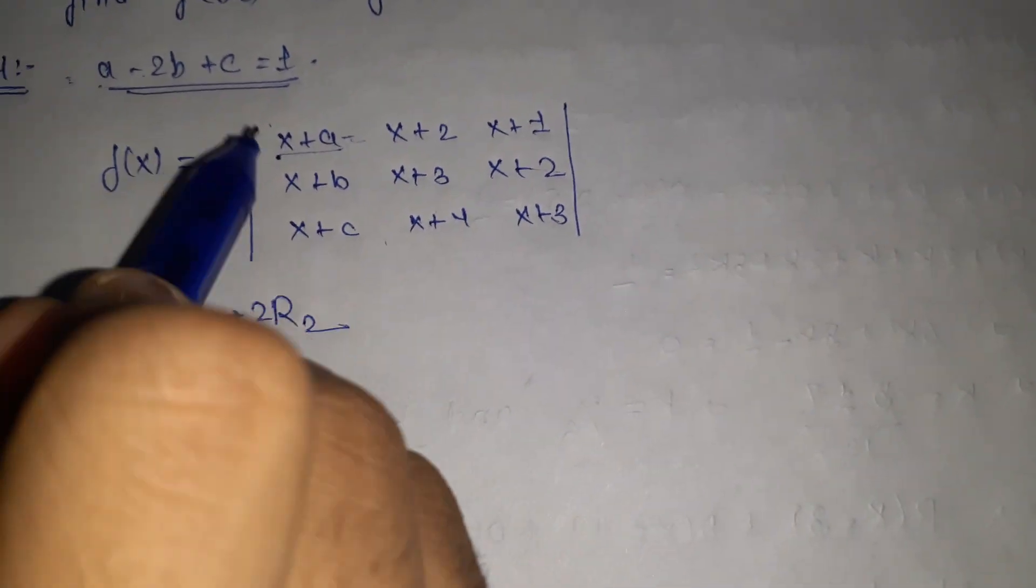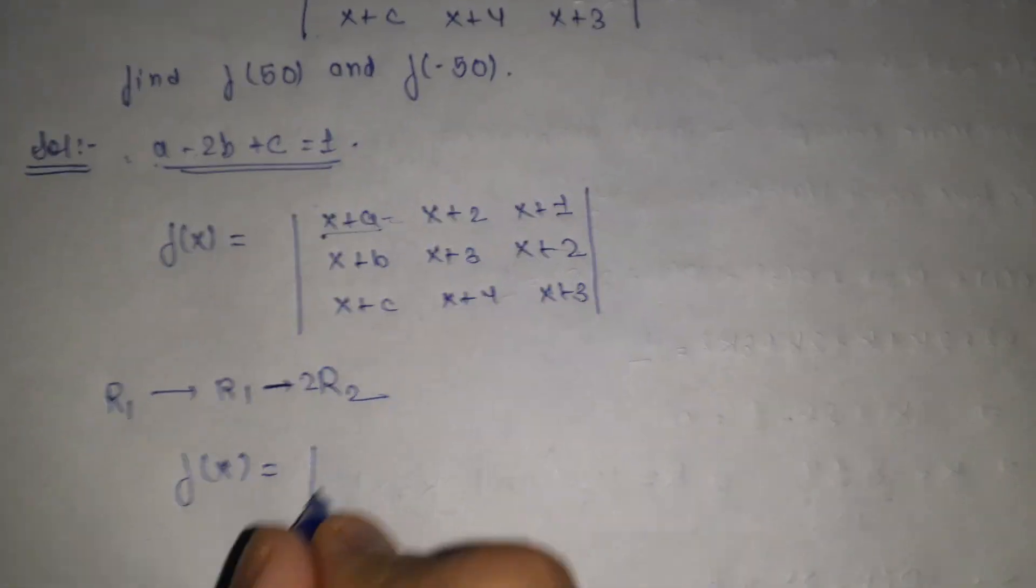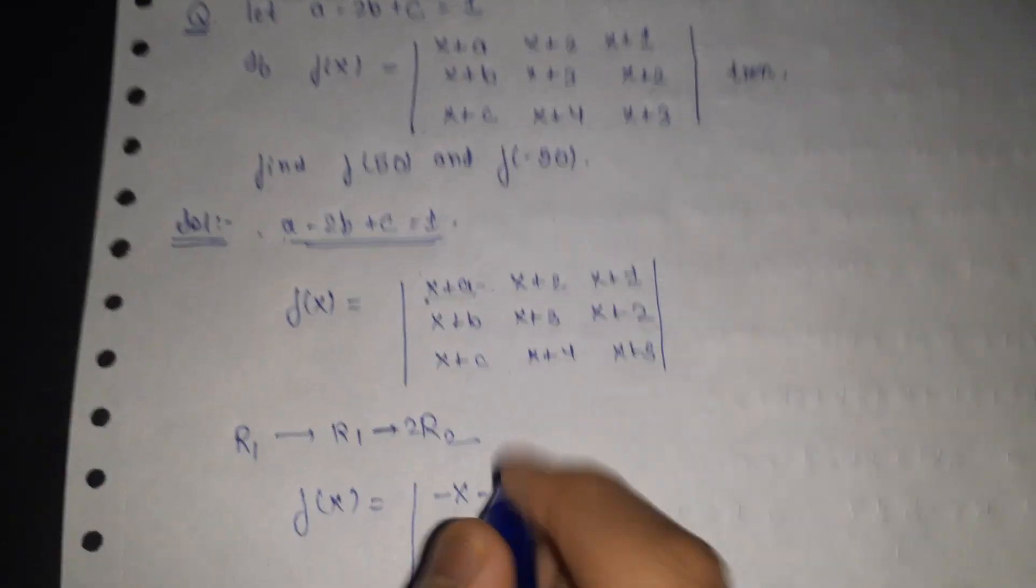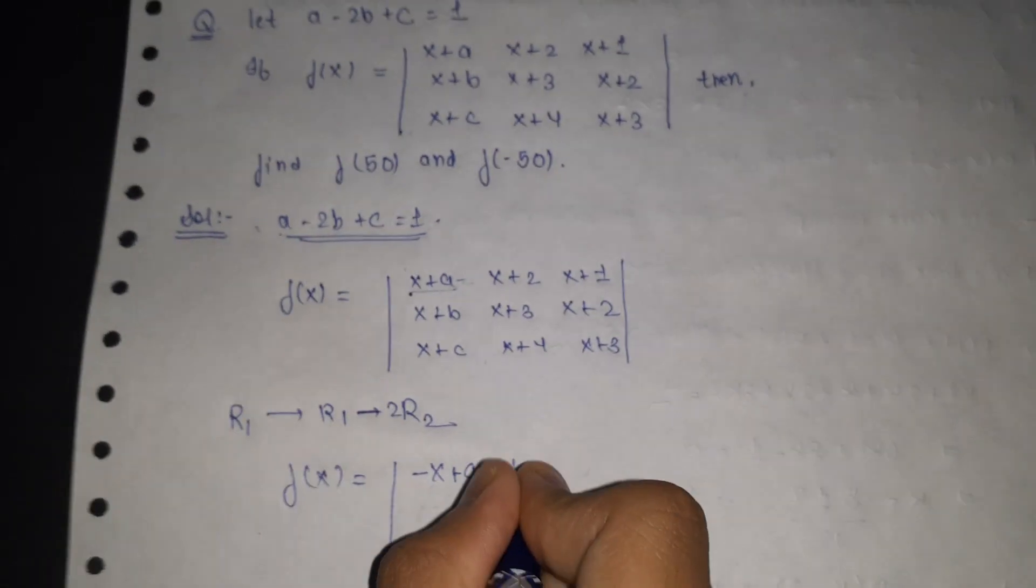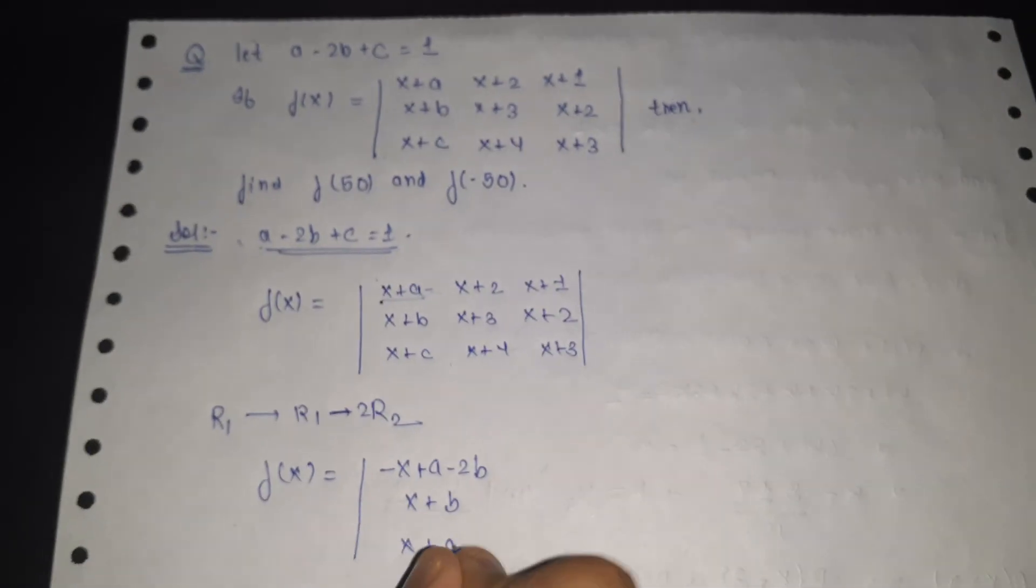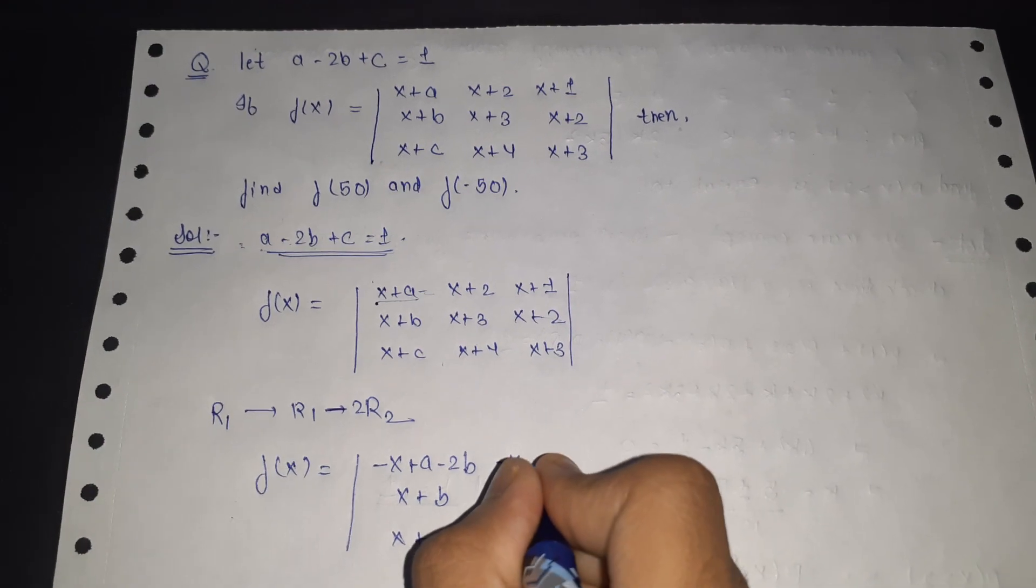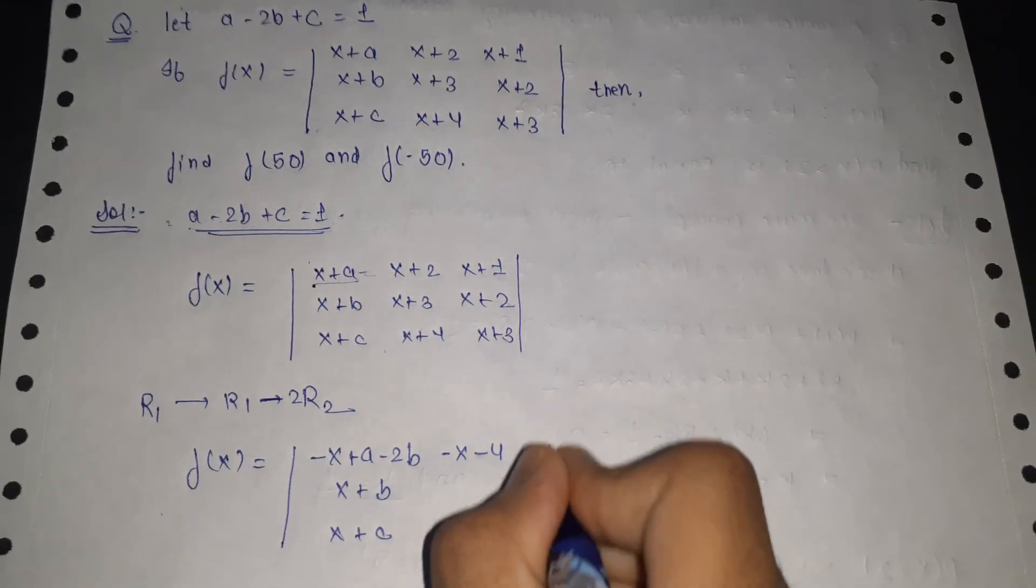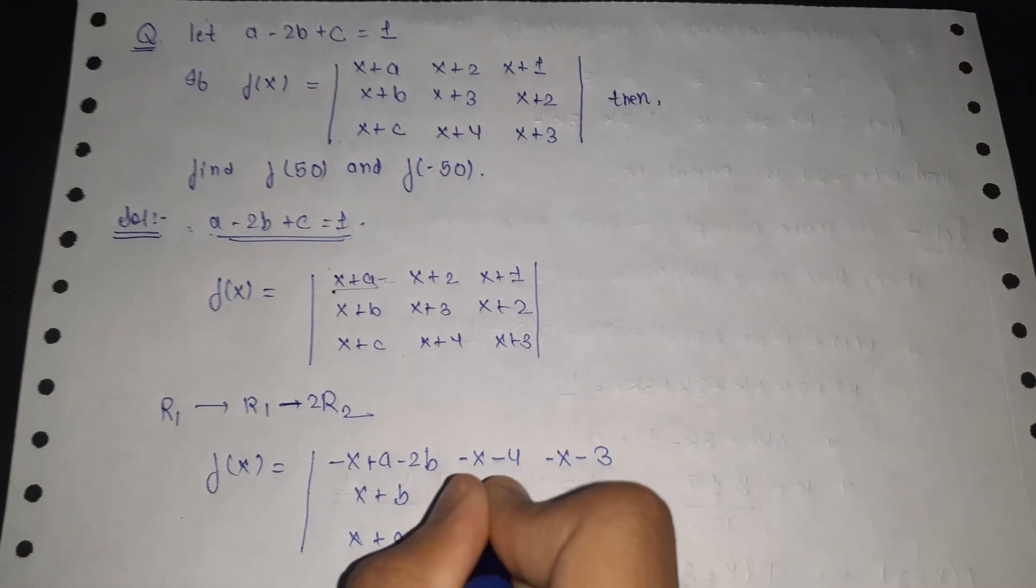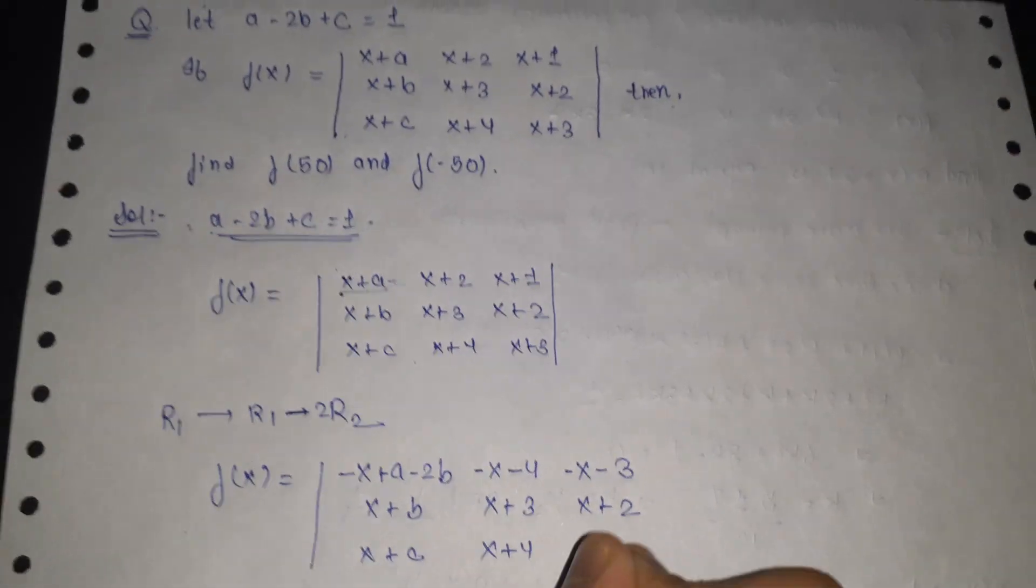So here we get x minus x plus a minus 2b. This will be the same. Here we will get minus x and minus 4. Here we will get minus x minus 3. The second and third rows remain x plus b, x plus 3, x plus 2 and x plus c, x plus 4, x plus 3.